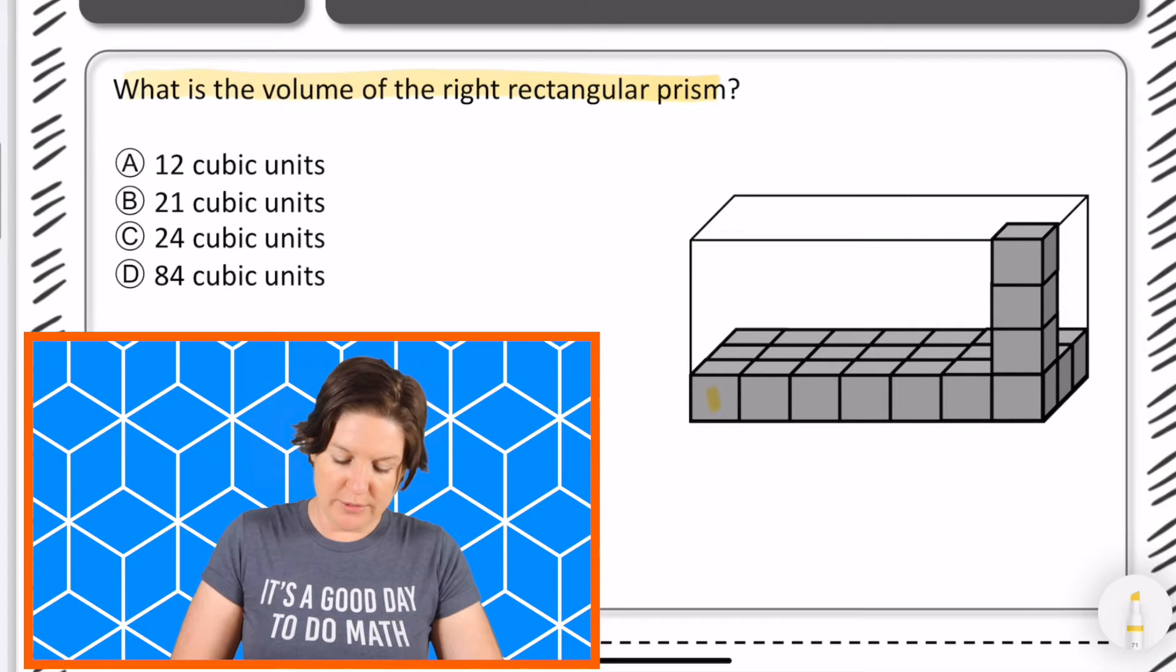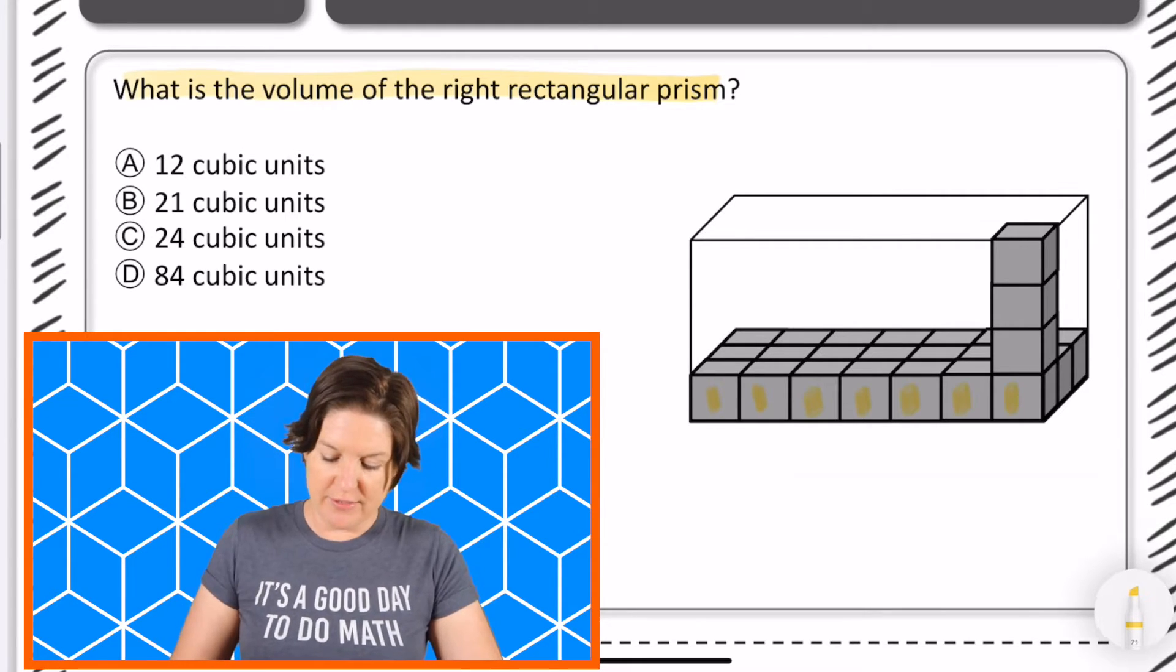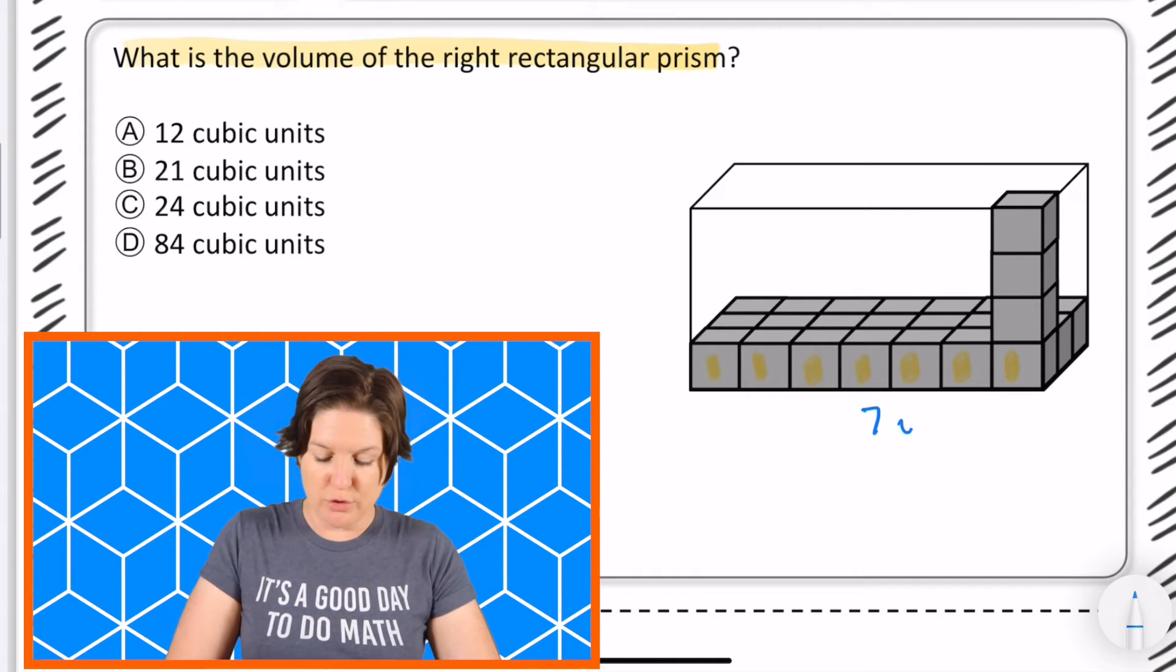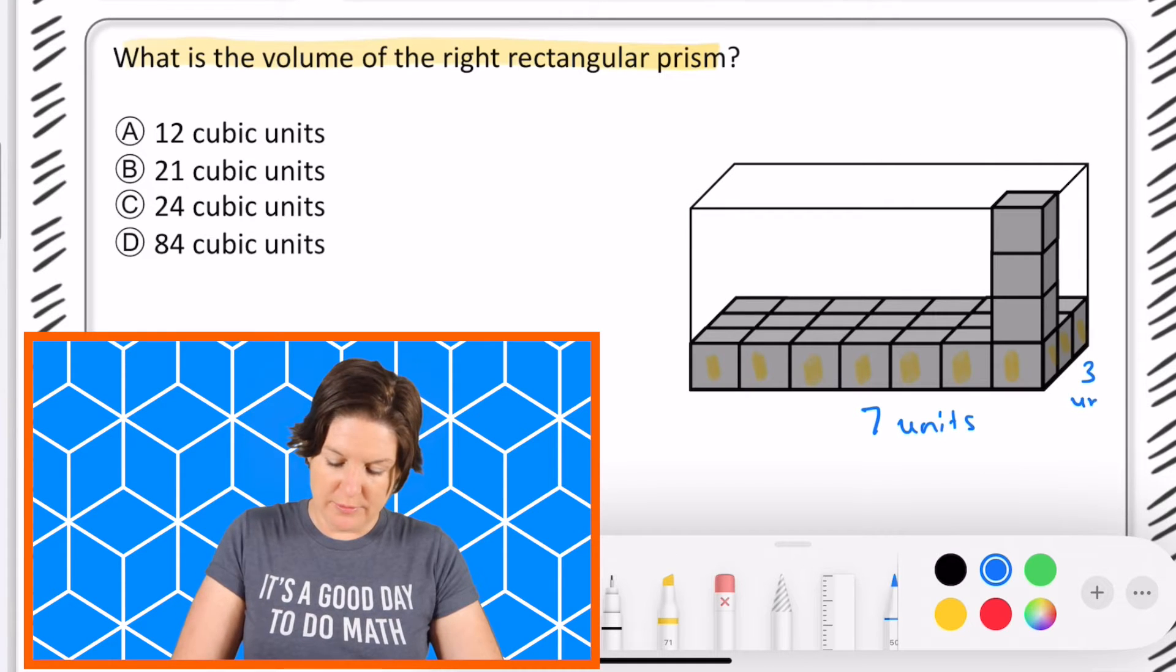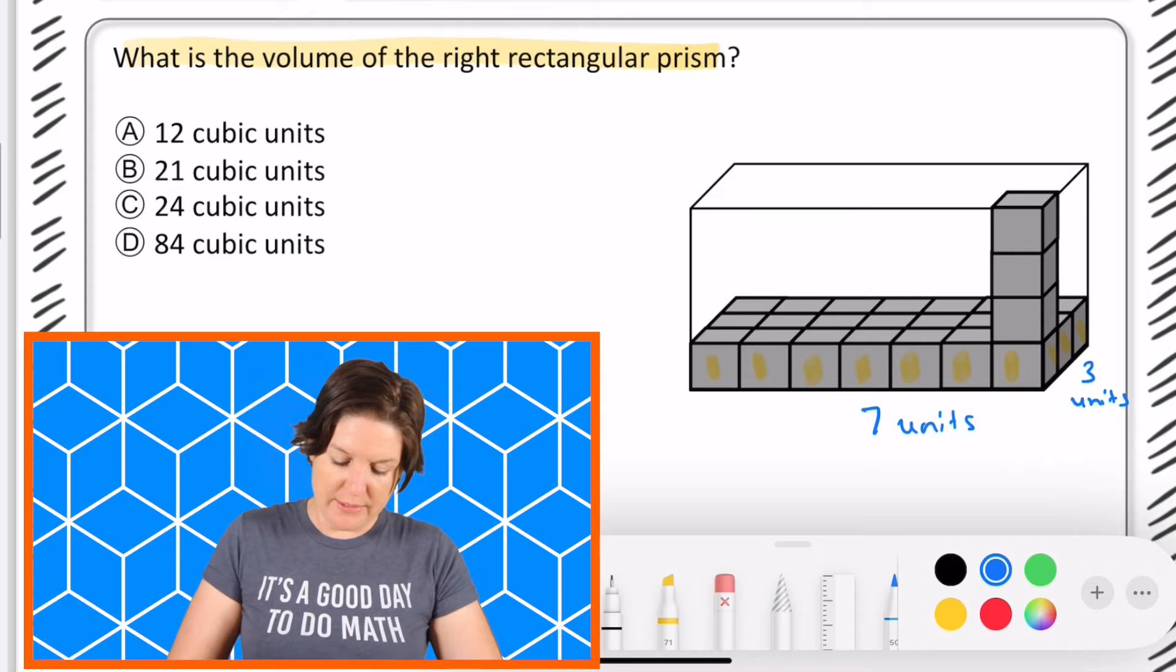If I go across that would be one two three four five six seven, a length of seven units, and then we have a width of one two three units. And then we have a height up here of one two three four units.